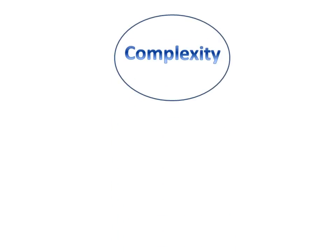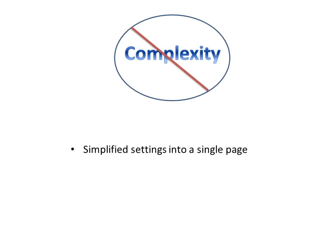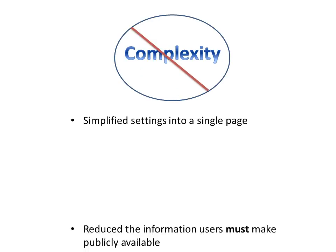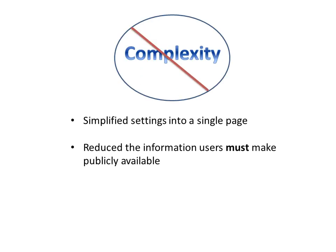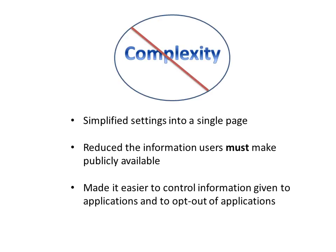One of the problems with Facebook's privacy settings were that they were just too complicated. They still give you lots of options if you want to get granular, but now you can set your basic settings on a single, more simplified page. Facebook has also reduced the information that users must make publicly available, and it's made it easier to control information given to applications. There's even a simple way to opt out of all applications.